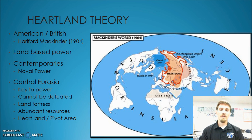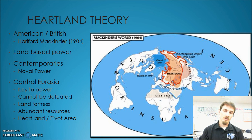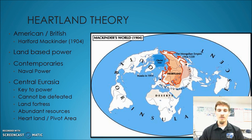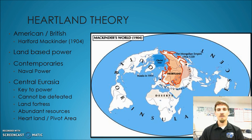The heartland was this place that he did not feel could be defeated because he saw it as this 'land fortress.' Now this was prior to the effective use of tanks and also the effective use of air forces. So this idea of a large impenetrable land fortress that could not be defeated — because you would have a huge buffer between yourself and any military that might be trying to invade. He believed that if any one country had control over this particular territory, they would not be able to be defeated.